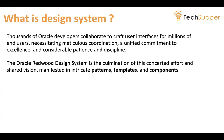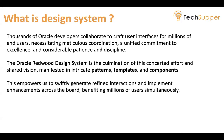Creating state-of-the-art quality at scale requires careful collaboration, coordination, a shared vision around high-end quality, and lots of patience and discipline. This empowers us to swiftly generate refined interactions and implement enhancements across the board, benefiting millions of users simultaneously. We can make improvements in one component and have the beneficial effects reach tens of millions of users all at once.